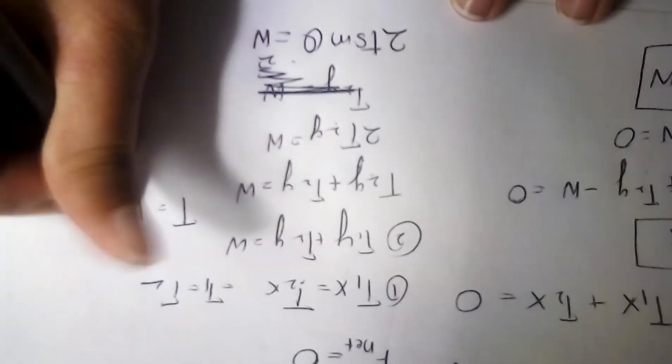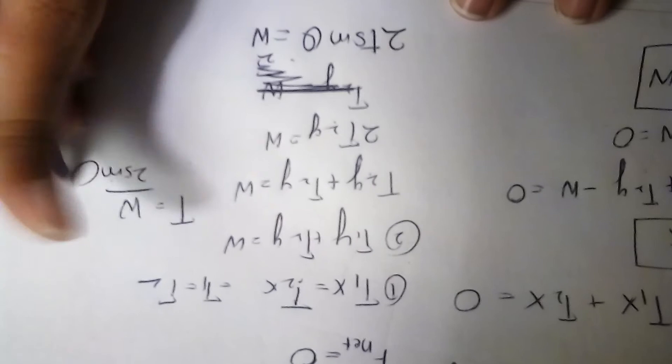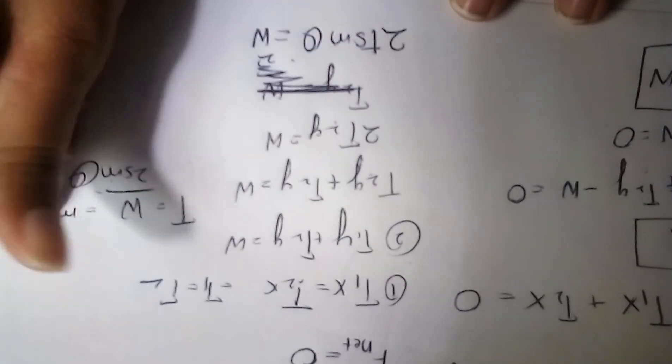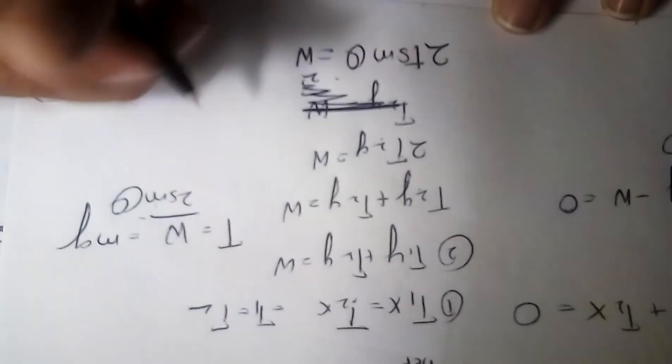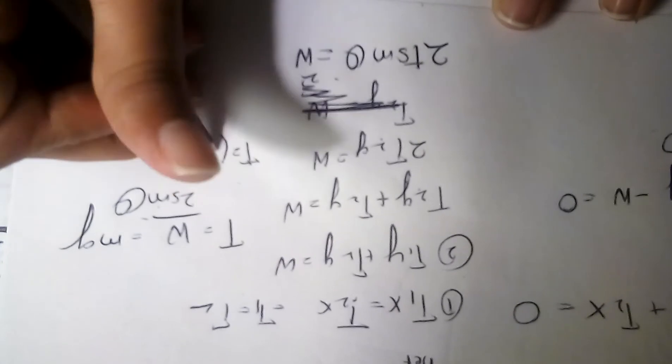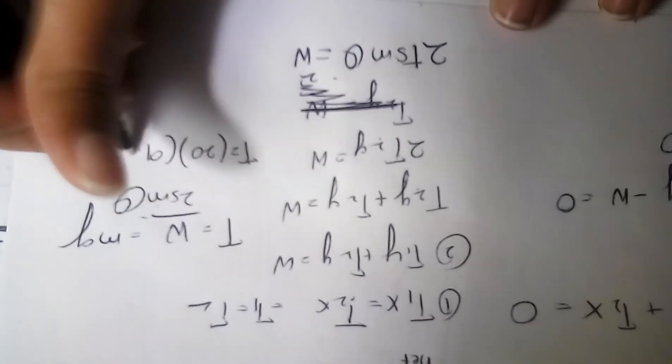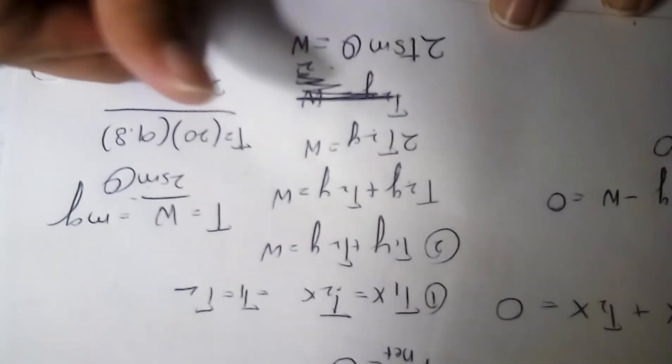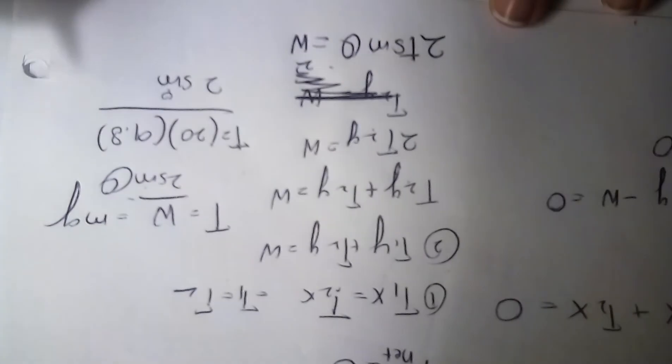Let's solve for T then. W over 2 sine theta. W is just your mg. So T equals your mass, which was 20, your gravity was 9.8, then your 2, and then your sine.